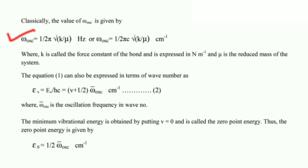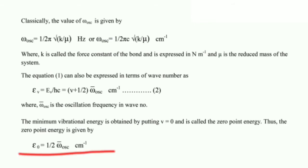Equation 1 can also be expressed in terms of wave number as: epsilon_v = E_v / hc = (v + 1/2) × omega_osc_bar in cm⁻¹ (equation 2), where omega_osc_bar is the oscillation frequency in wave number. The minimum vibrational energy is obtained by putting v = 0 and is called the zero-point energy: epsilon_zero = (1/2) × omega_osc_bar in cm⁻¹.